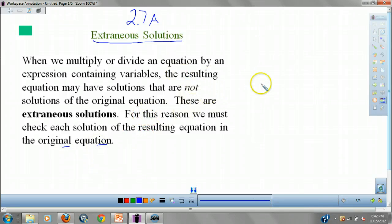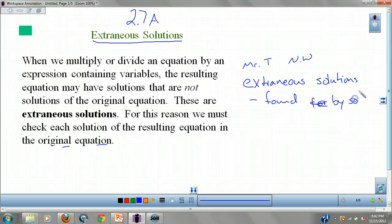Okay, extraneous solutions - this is the Mr. T noteworthy addition. Extraneous solutions are solutions found by solving for a variable, but guess what? They don't work in the original equation. You may say, Mr. Trolleyer, that doesn't make any sense. If I solve for x, that's what x is. But we get some weird cases. We're going to take a look at how we check for it. Let's do some examples.